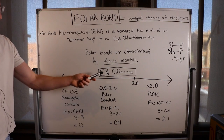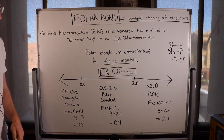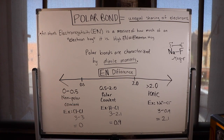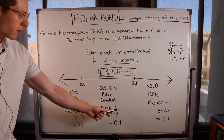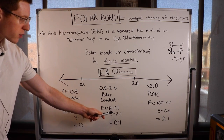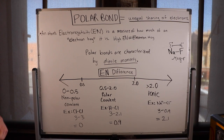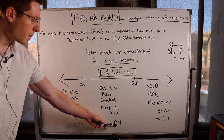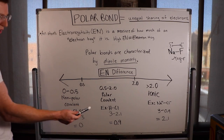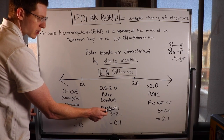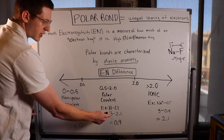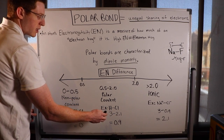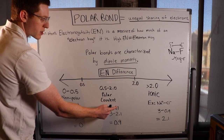The next level up in electronegativity difference is a polar covalent bond, which occurs when the electronegativity difference ranges from 0.5 to 2. An example is HCl: the electronegativity of chlorine is 3, while the electronegativity of hydrogen is 2.1. The difference is 0.9, so there is some polarity — chlorine is more of an electron hog, giving it a partial negative charge, and the bond has a net dipole moment towards the chlorine.